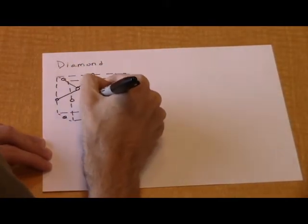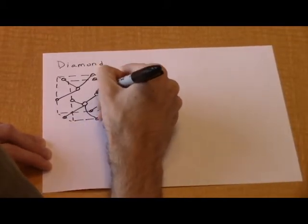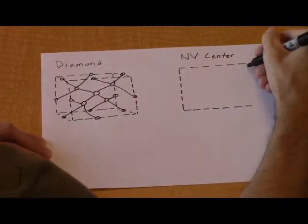The nitrogen atom bonds to three carbon atoms, leaving a lone pair. Three electrons from dangling bonds from the carbons surrounding the lattice vacancy give a total of five electrons in the center.